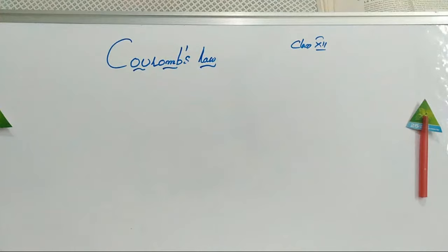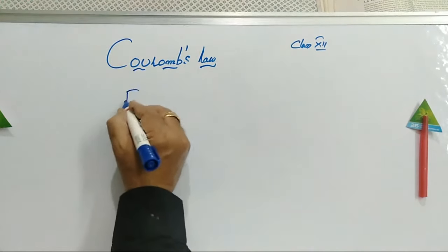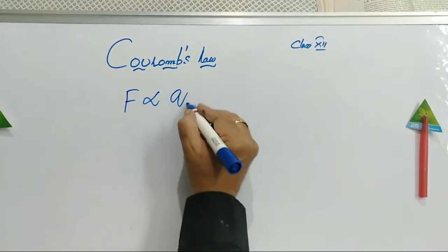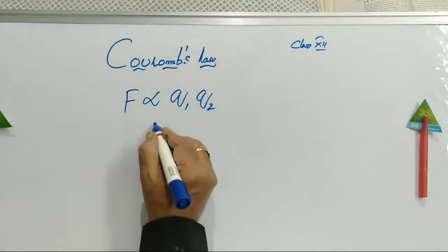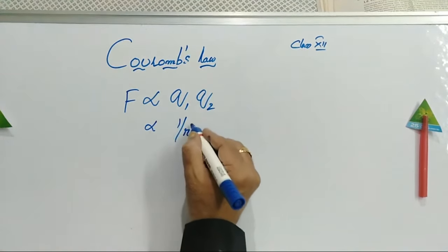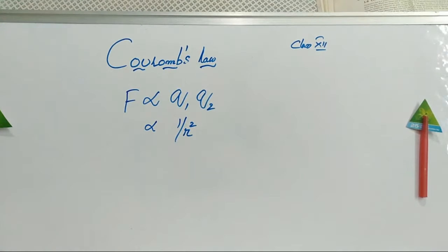The force of attraction or repulsion is directly proportional to the product of charges. Here, F is directly proportional to the product of the two charges Q1 and Q2, which are separated by a distance R. This force is inversely proportional to R square. Just like gravitational force obeys the inverse square law, electrostatic force also obeys the inverse square law.